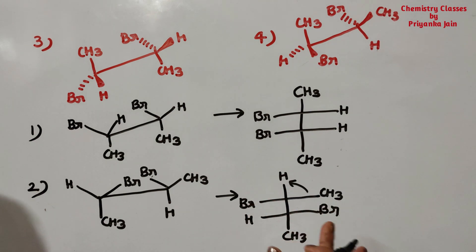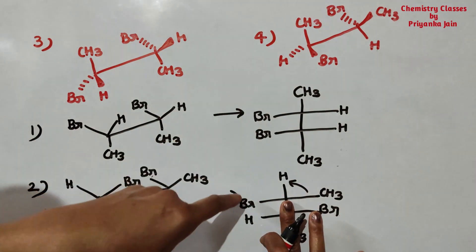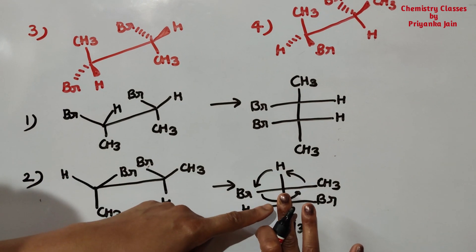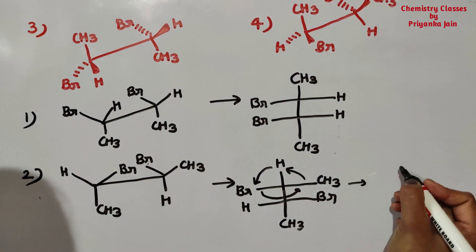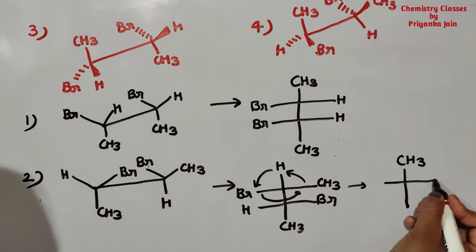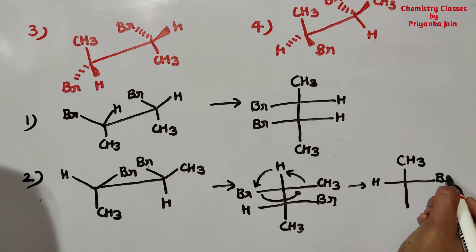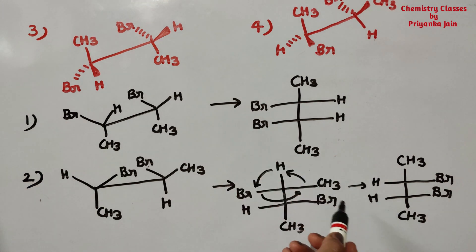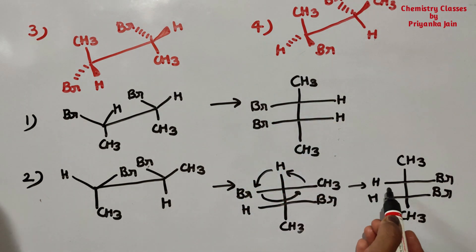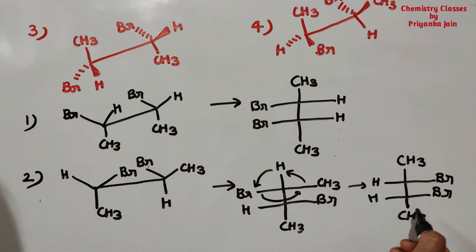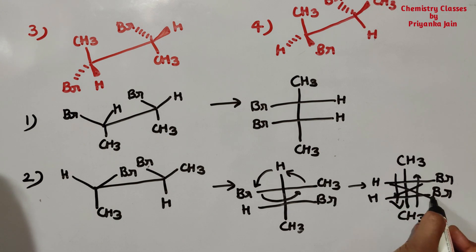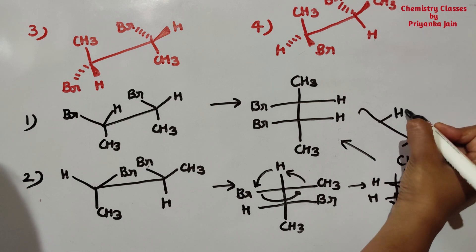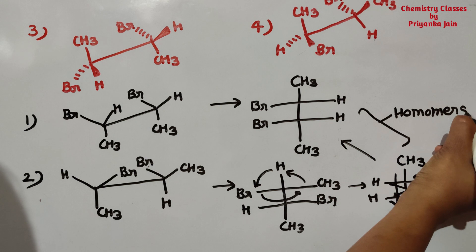To align the CH₃ group, we fix this bond and rotate all three atoms clockwise or anti-clockwise. After rotation, CH₃ goes above, hydrogen comes here, and bromine is here. Now match both structures — both are the same since CH₃ matches CH₃. Rotating by 180 degrees gives the same structure. So structures one and two are identical — these are homomers.